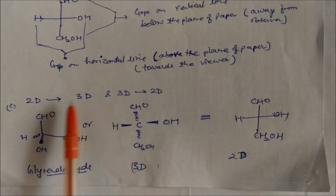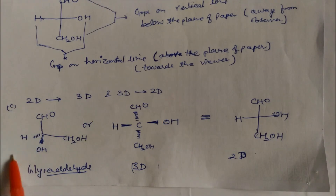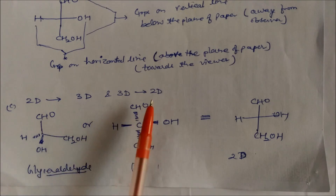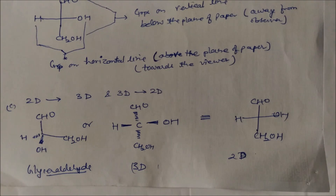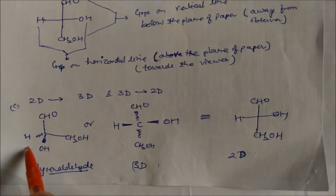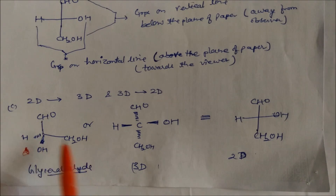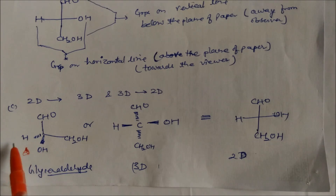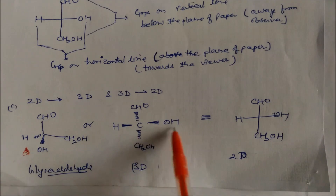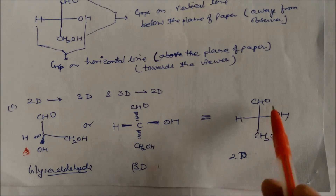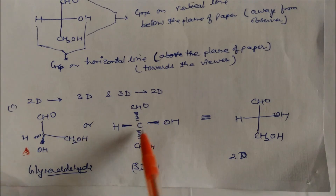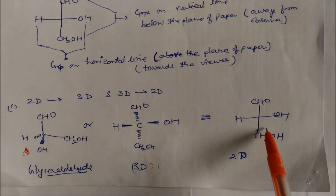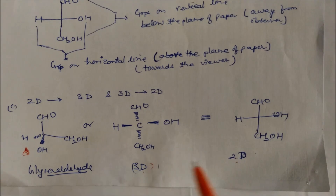For 3D to 2D conversion: starting with the three-dimensional structure having CHO, CH2OH, and hydrogen-OH — if your eyes observe from the side, CHO and CH2OH go behind the plane. The groups on the left and right are placed along the horizontal line. This is how we convert wedge-dash formula into Fischer projection formula — from 3D into 2D.